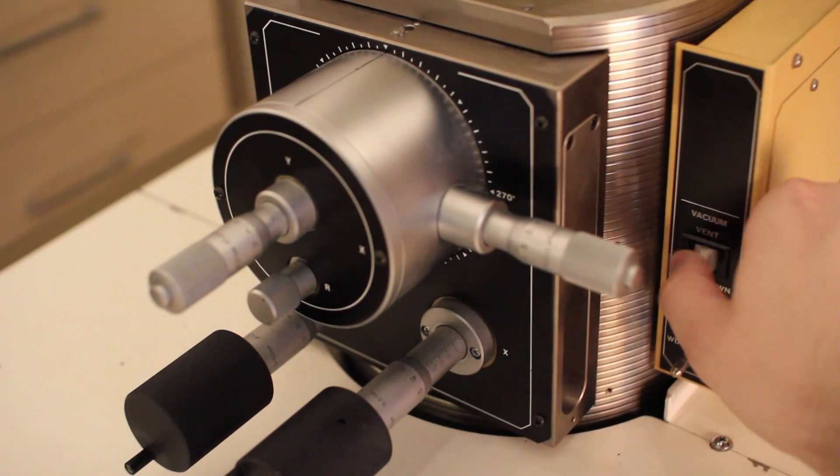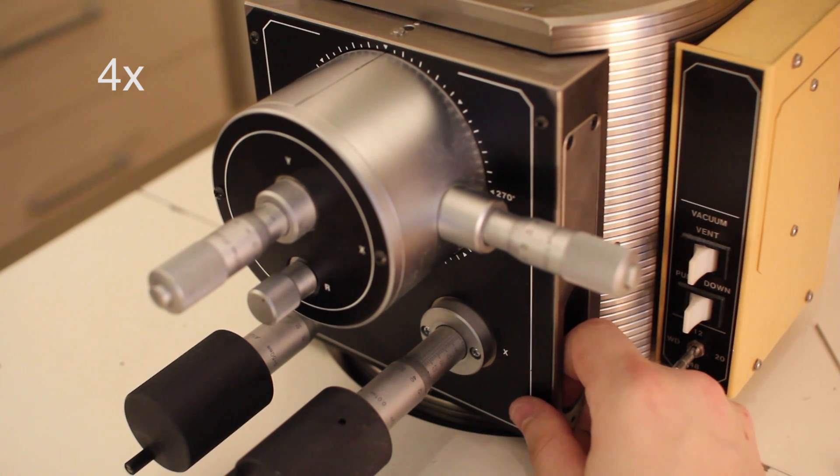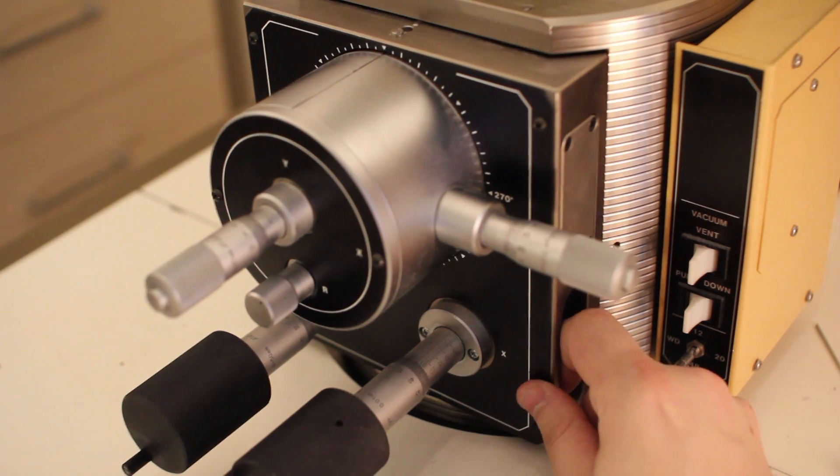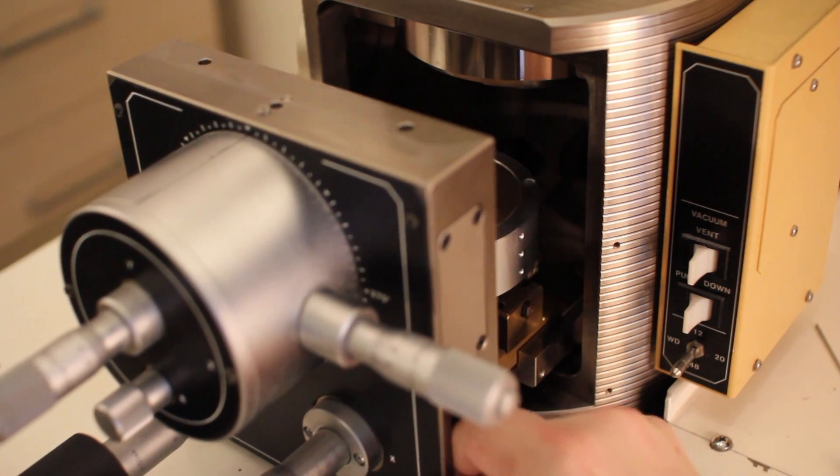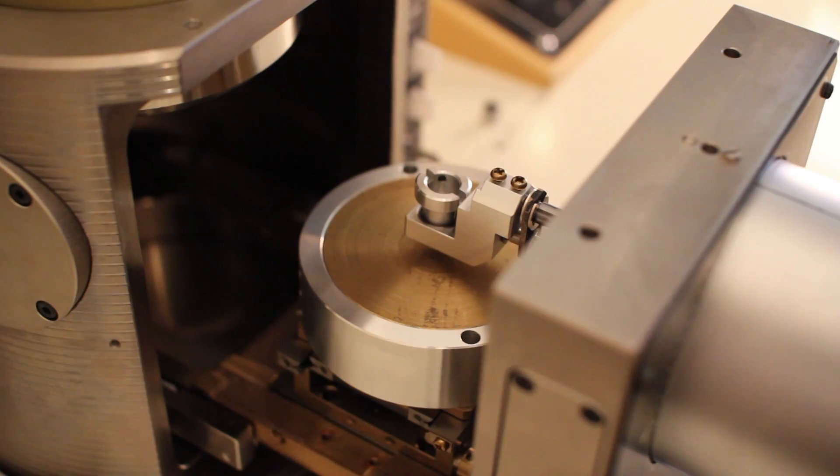To insert the sample into the chamber, you first need to vent the chamber by pressing this button. This closes several valves to the vacuum pumps, and air is introduced slowly into the chamber. There is nothing holding the chamber door in place except the atmospheric pressure during normal operation, so it can be opened by hand when the pressure is equalized.